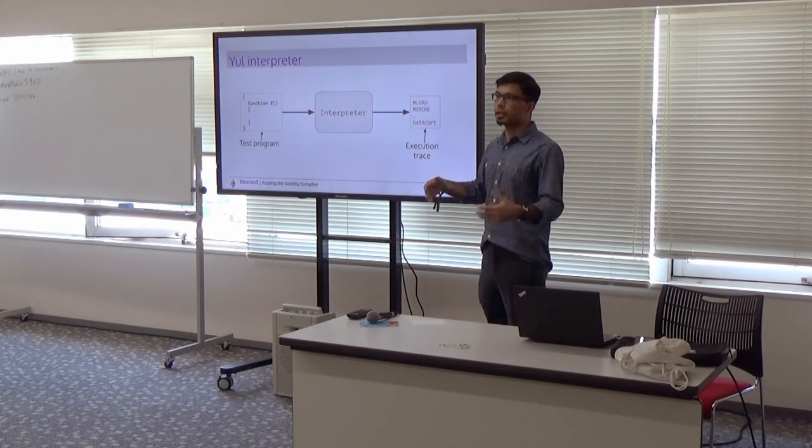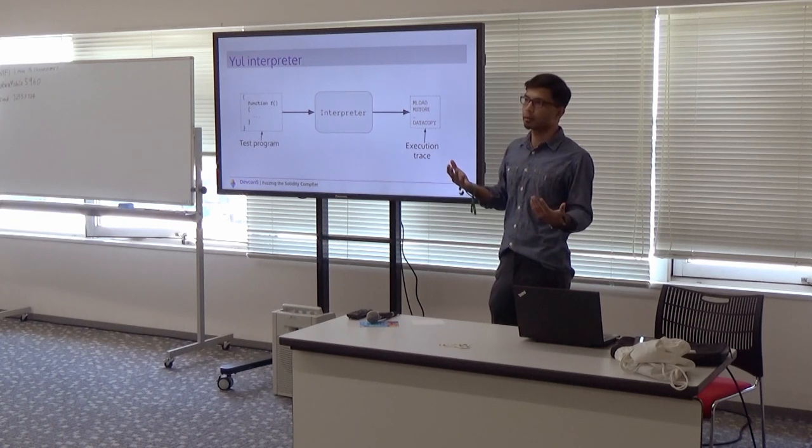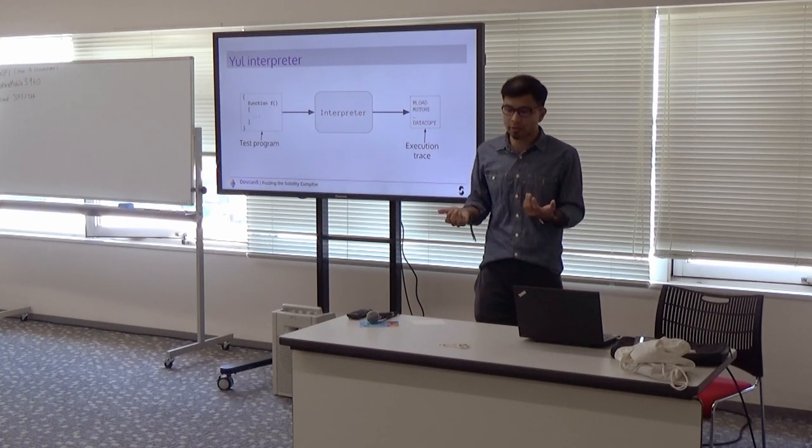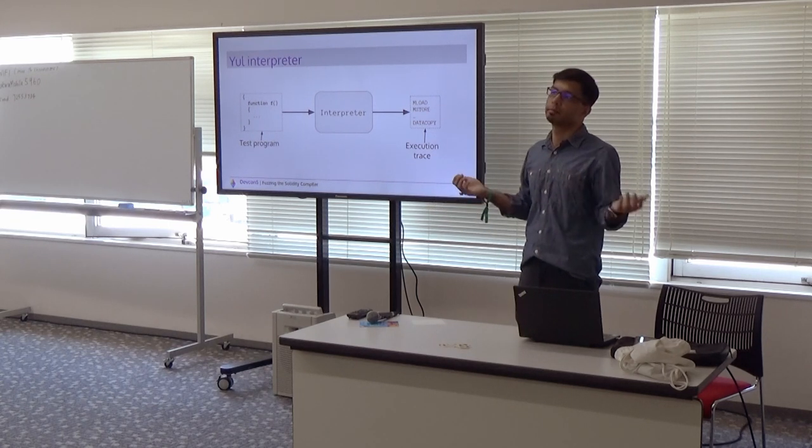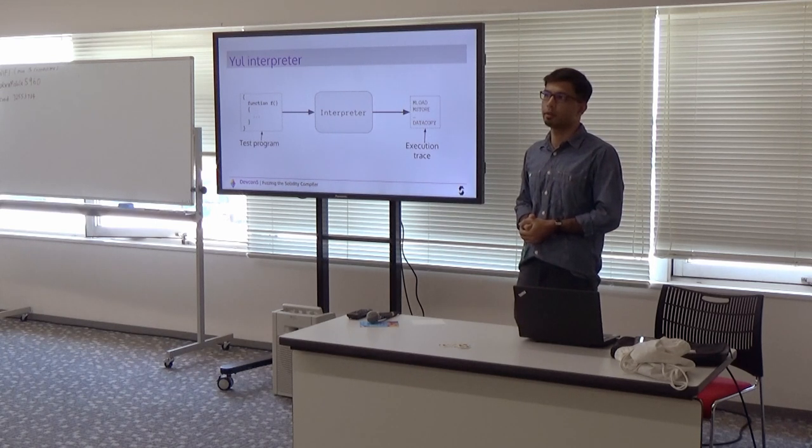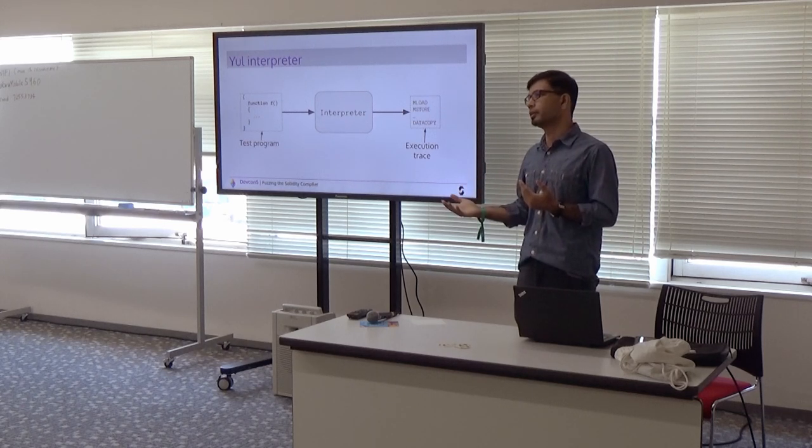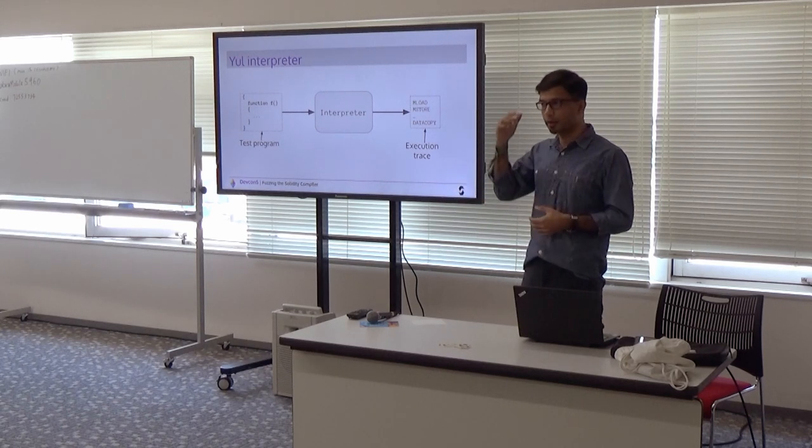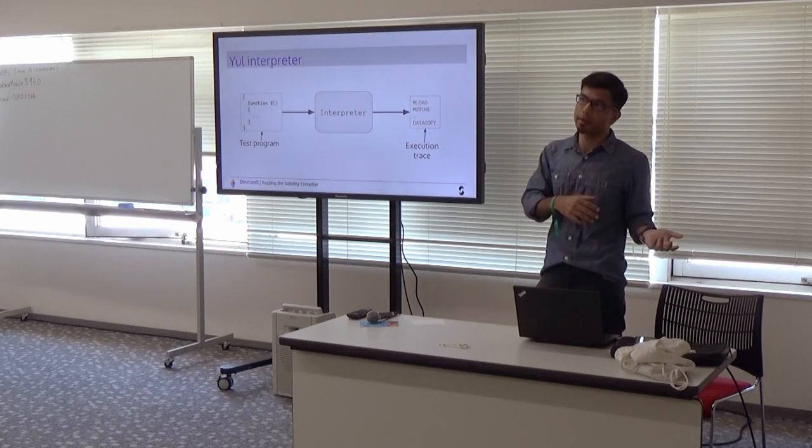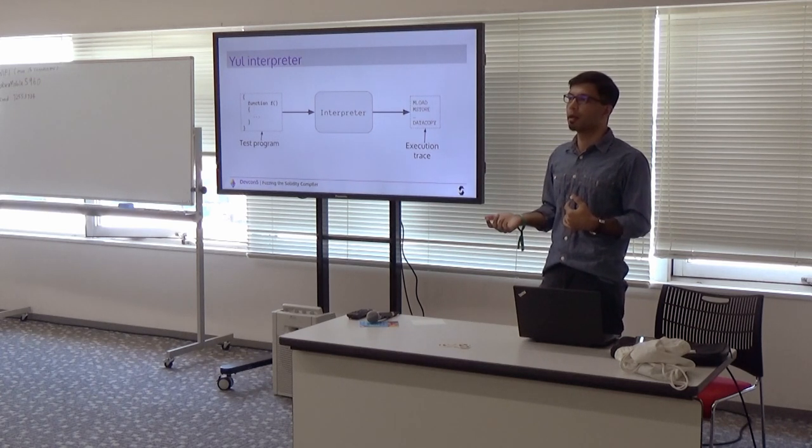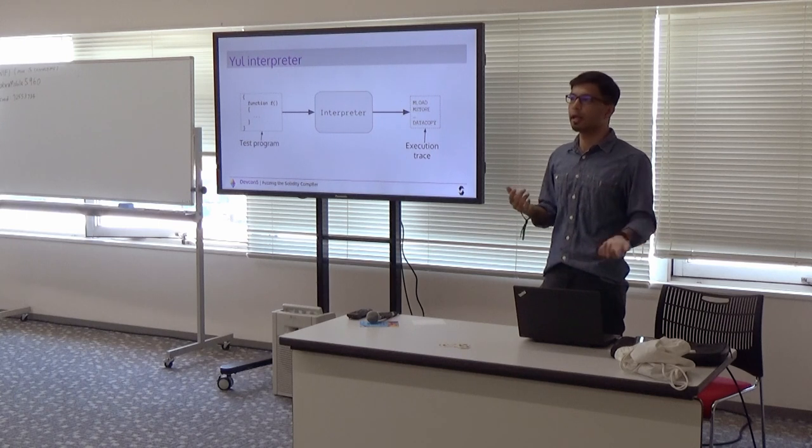So you get an execution trace which is sort of readable and you compare execution traces pre and post and it's pretty straightforward. So it can quickly tell you whether it's a bug in the optimizer or there's some other code. Of course, like I said, we introduced code and there could be a bug in the code that we introduced.